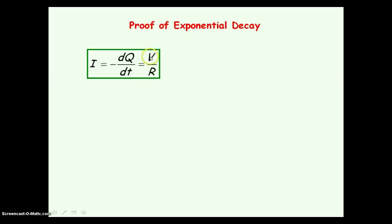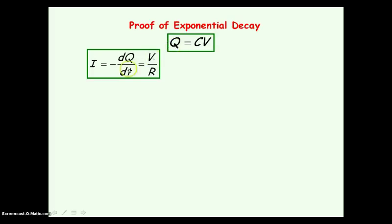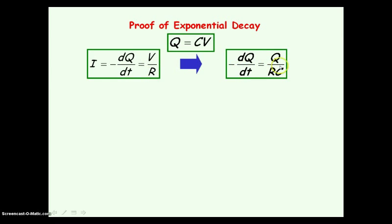Also from AS physics, current is equal to voltage across the resistor divided by the resistance. And for a capacitor we have the equation Q equals CV. The voltage across the capacitor is the same as the voltage across the resistor, so we can substitute and eliminate V in this equation, replacing it with Q divided by C. So the current becomes Q divided by C divided by R, which simplifies to Q divided by RC.